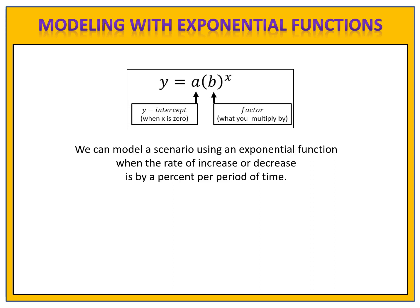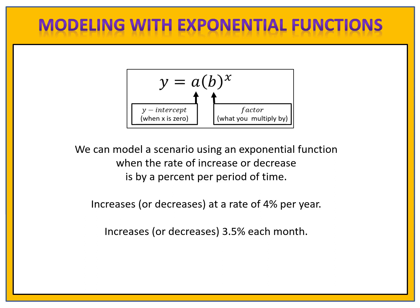Here are some examples. Something increases or decreases at a rate of 4% per year. Something increases or decreases 3.5% each month. Something increases or decreases by 2% per minute. Whenever our rate of change is by a percentage for every minute, year, month, week, decade, or whatever the period of time is, we can model using an exponential function.